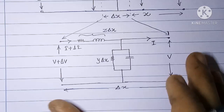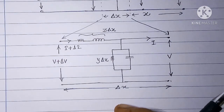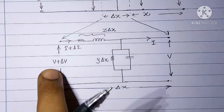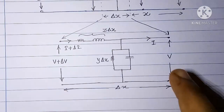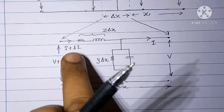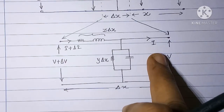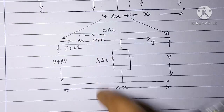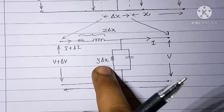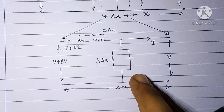This is the part of line having length delta x, with terminal voltages as V plus delta V and capital V, currents as I plus delta I and I, impedance as Z into delta x, and admittance as y into delta x.